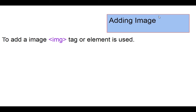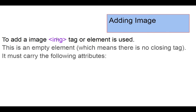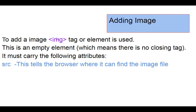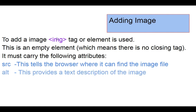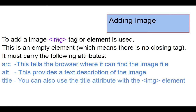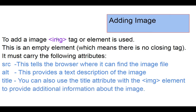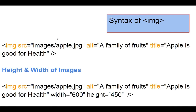To add an image in HTML, we use a tag called IMG. This is an empty element without a closing tag, and it has attributes along with it. The first attribute is 'src', which tells the browser where to find the image file. The 'alt' attribute provides text information about the image if the image is not visible for some reason. You can also use a 'title' attribute to provide additional information about the image.